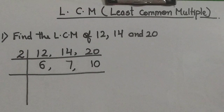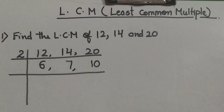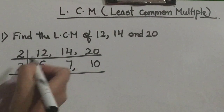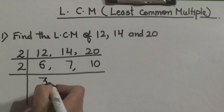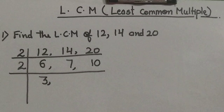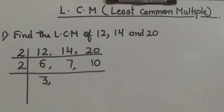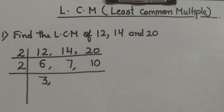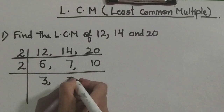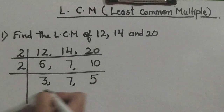Again we check if we can divide any of the numbers by 2. Yes — we can divide 6 and 10 by 2. 2 threes are 6. If a number is not exactly divisible by that prime number, we bring it directly to the next row as it is. 7 is not divisible by 2, so 7 comes as it is. 2 fives are 10.